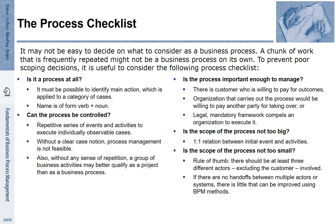We also have to ask ourselves: is it a process that we can control? A key characteristic of a process is that it is a repetitive series of events and activities. Things that just happen occasionally are not suitable to be represented as a process.